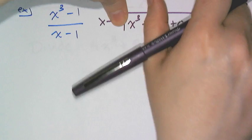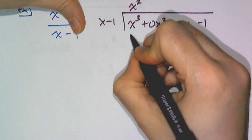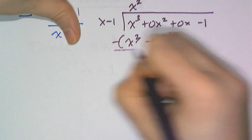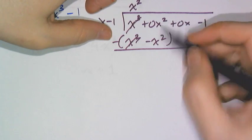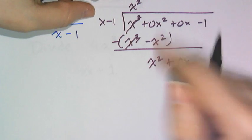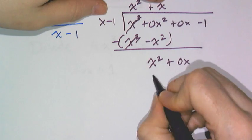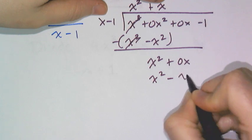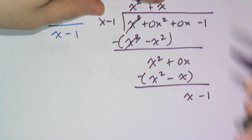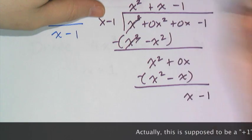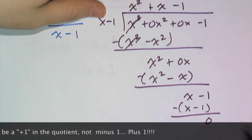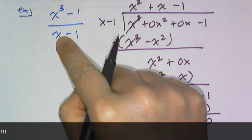Starting with the x's: I need x² in the quotient. I get x³ − x² after multiplying, then subtract — those cancel. I'm left with a positive x², and I bring down the 0x. I multiply x by x to get x²; I write x² − x, subtract the whole thing, and I'm left with x. I bring down the −1, and notice: x − 1 over x − 1 equals 1. I get a remainder of 0, which means x − 1 is a factor of x³ − 1.